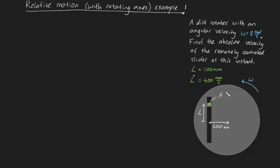Find the absolute velocity of the remotely controlled slider at this instant. So what's going on here? We've got this remotely controlled slider, which I've labeled point A, and we need to find the absolute velocity of this guy.